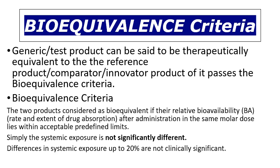What do we mean by 'not significantly different'? Many regulatory authorities consider that differences in systemic exposure up to 20% are not clinically significant. That means if the test product lies within 20% of the reference product values — the rate and extent of absorption values — then it will be equivalent, because systemic exposure variation or range up to 20% is not considered significant.